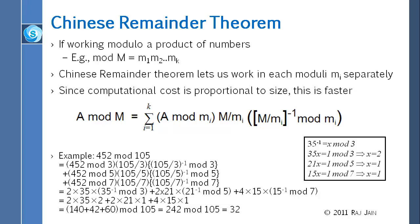The way you pre-calculate is that you divide M by mi and then multiply by its inverse. To find the inverse you need to use the table method, or you can use the inspection method for small moduli — where you want to find what value of x gives 35x congruent to 1 mod 3. You try x=1 and it doesn't work; x=2 works. But for large moduli, you really need to do the table, because otherwise you'd be trying every possible value of x.